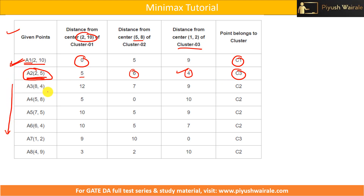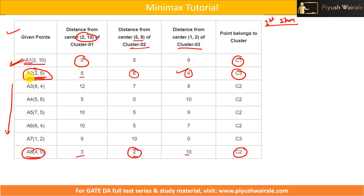This process we have to follow for all data points. For the last data point, distance between a8 and all three clusters is 3, 2, 10 — out of these, the minimum is 2, so this data point will belong to cluster C2. This is the first iteration. Once we have found the distances between all data points and clusters and classified them accordingly, we need to find the updated centroid — that is, the updated centers.